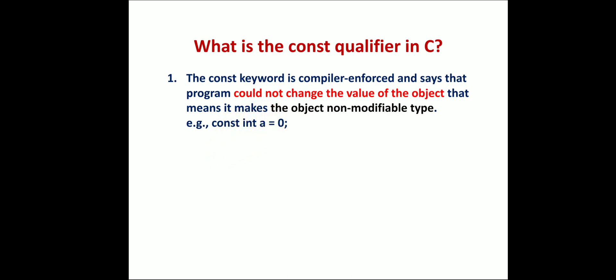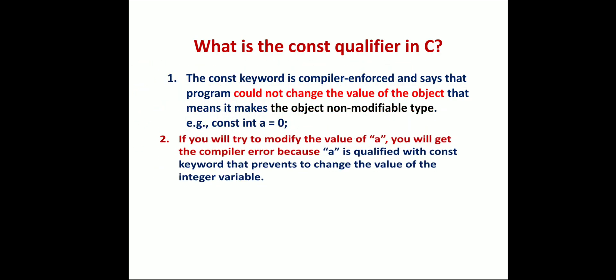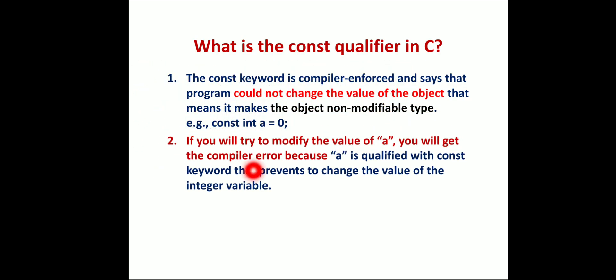The const keyword can be changeable if some external factors come into play. Until that, the program will never change its value. If you try to modify the value of a, you will get a compiler error because a is qualified with the const keyword that prevents changing the value.